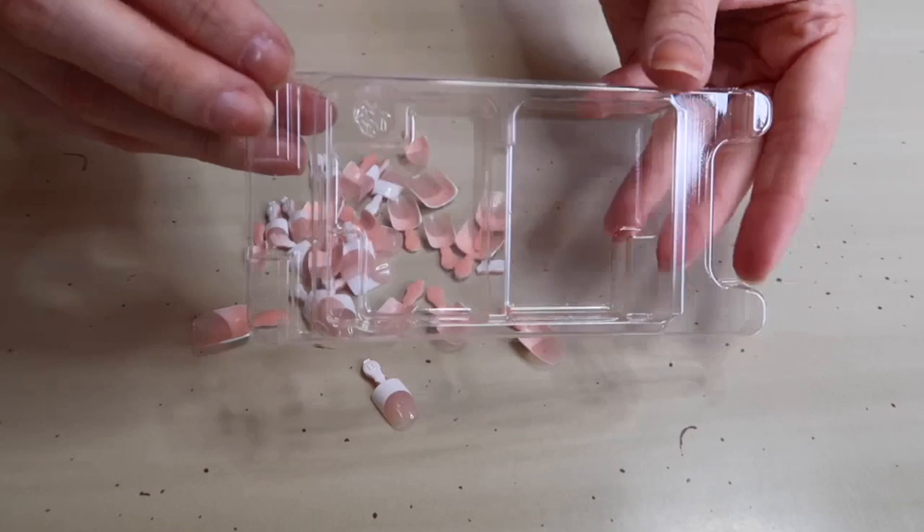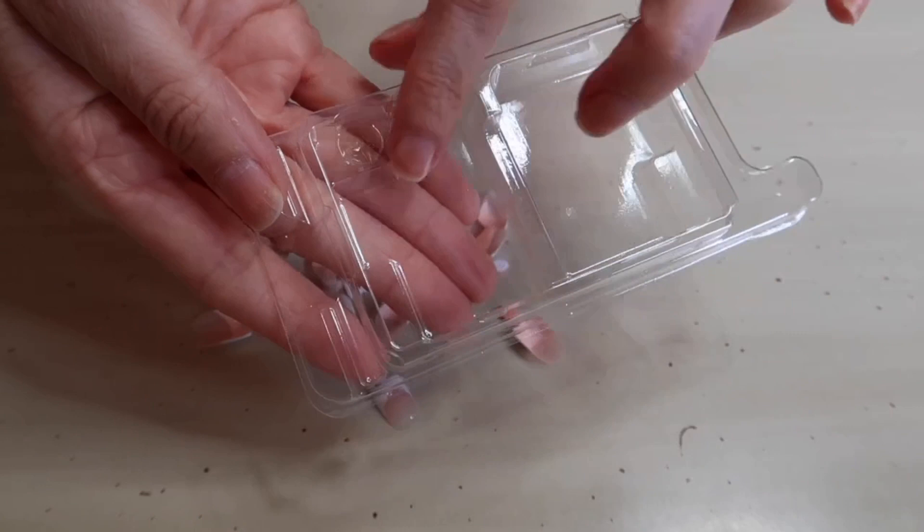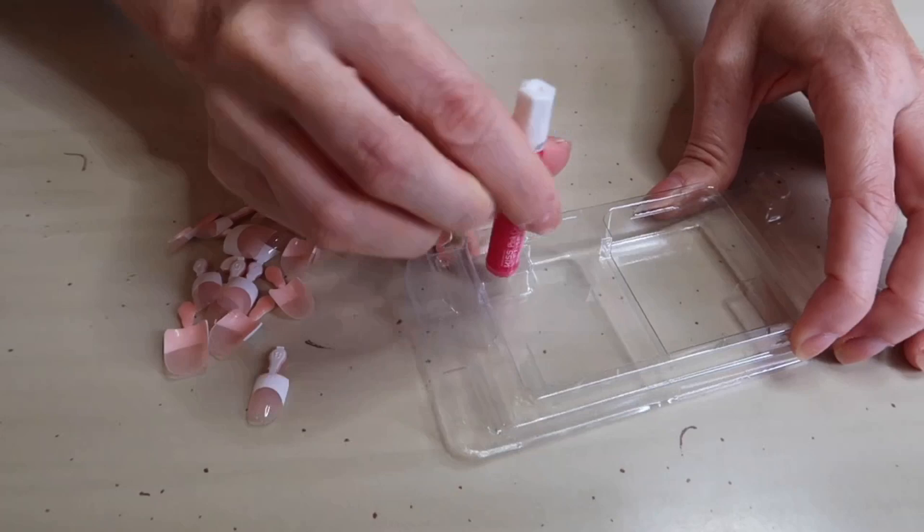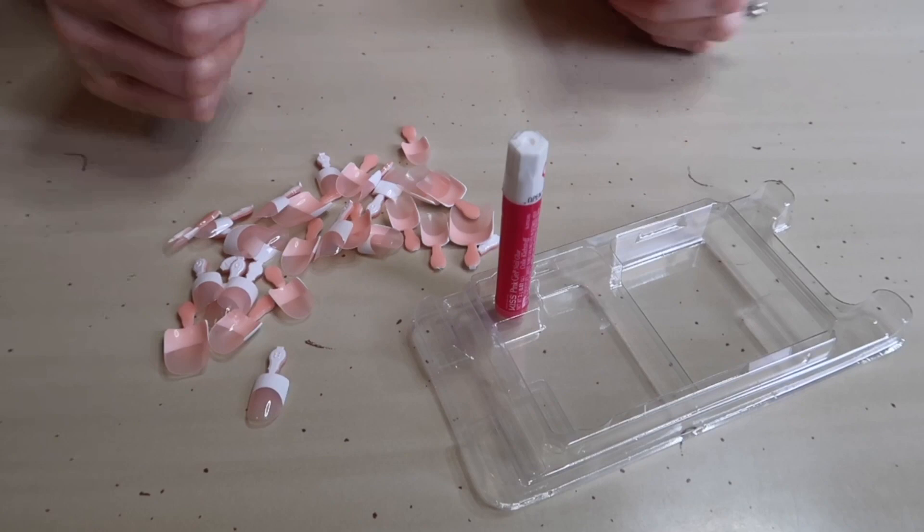I'm about to show y'all a really cool trick that a lot of people might not know. You see this hole right here in the thing that the nails came in? This is to hold your nail glue while you're doing your nails. So you just stand it up right here. Obviously you'll have the lid off, but once you get done painting the glue on one of the nails, you just stand it right back here and then your glue won't go anywhere.